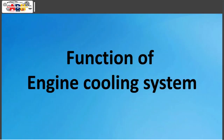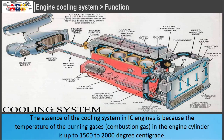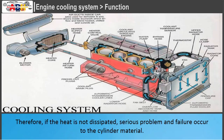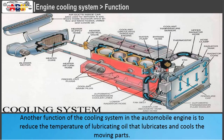Function of engine cooling system: The essence of the cooling system in IC engines is because the temperature of the burning gases in the engine cylinder is up to 1500 to 2000 degrees centigrade. This is above the melting point of the material of the cylinder head and body of the engine. Therefore, if the heat is not dissipated, serious problems and failure occur to the cylinder material. Another function of the cooling system is to reduce the temperature of lubricating oil that lubricates and cools the moving parts.